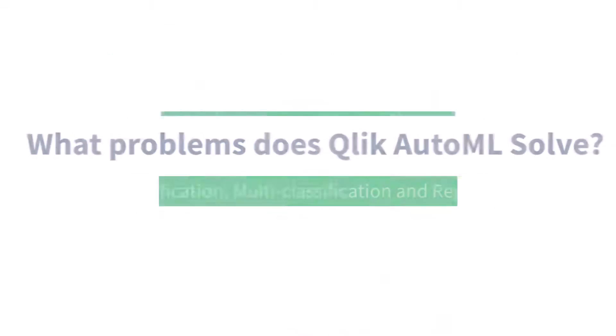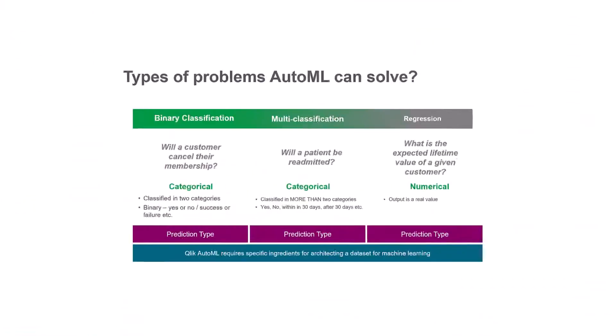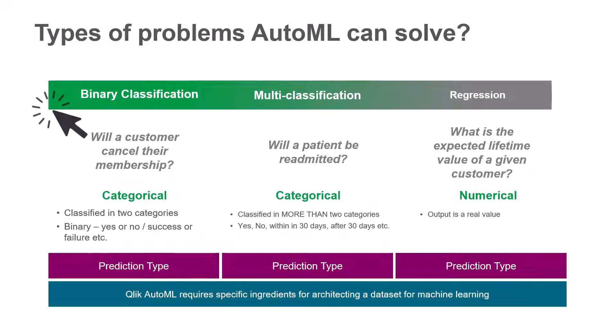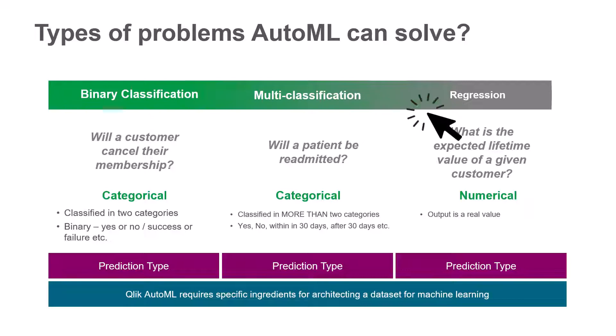What problems does Qlik AutoML solve? The following are three types of problems along with examples that Qlik AutoML can solve: binary classification, multi-classification, and regression.